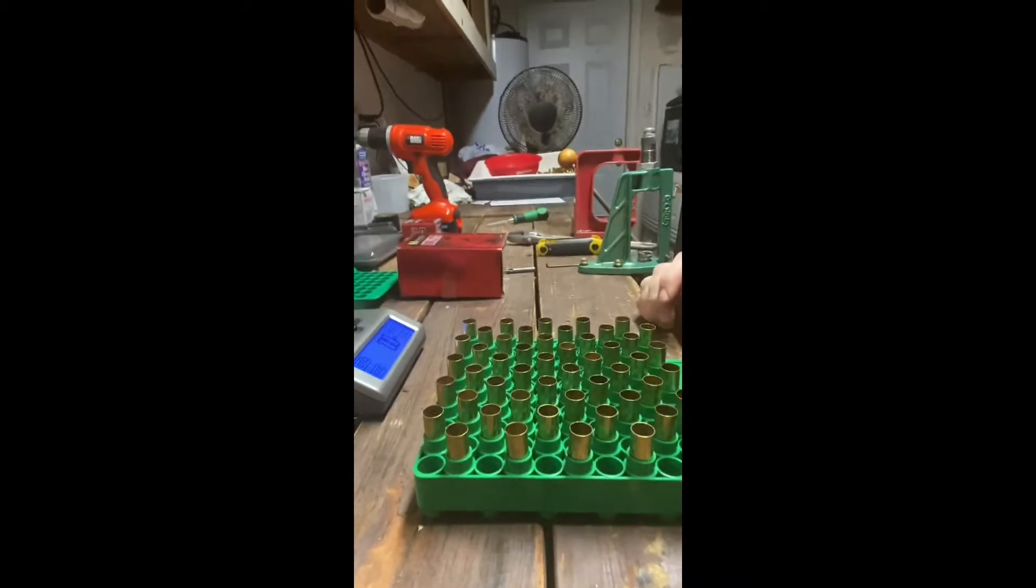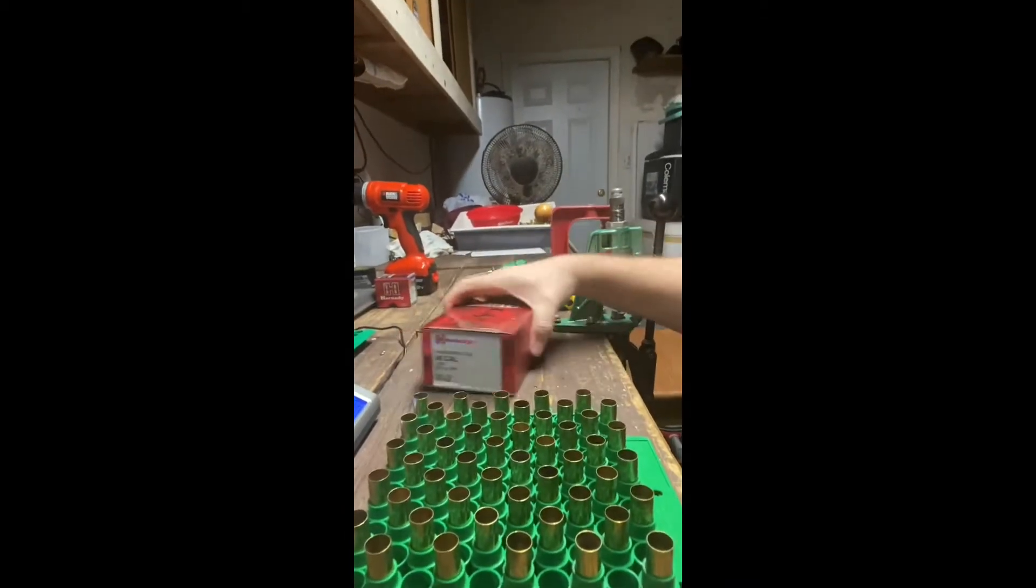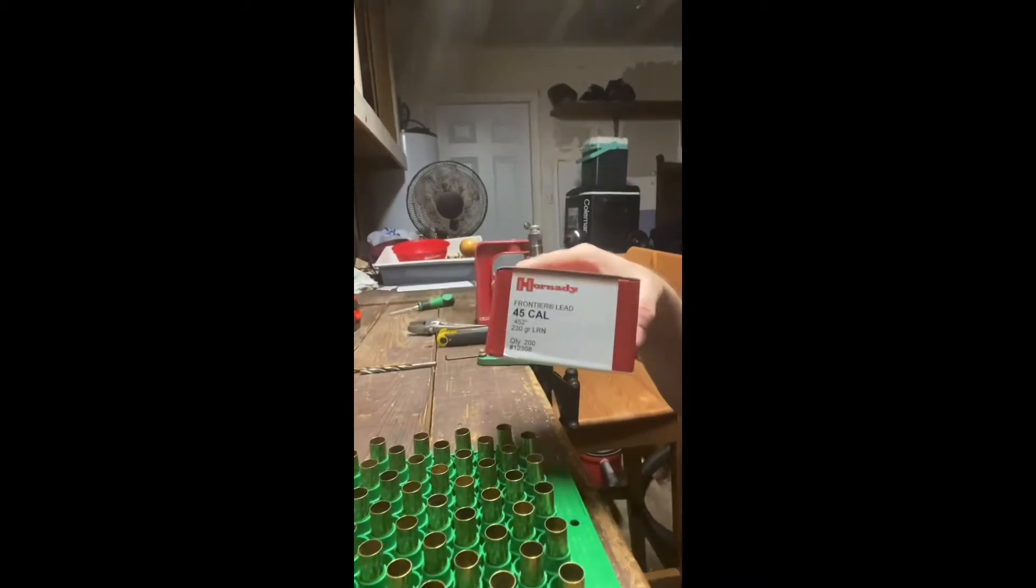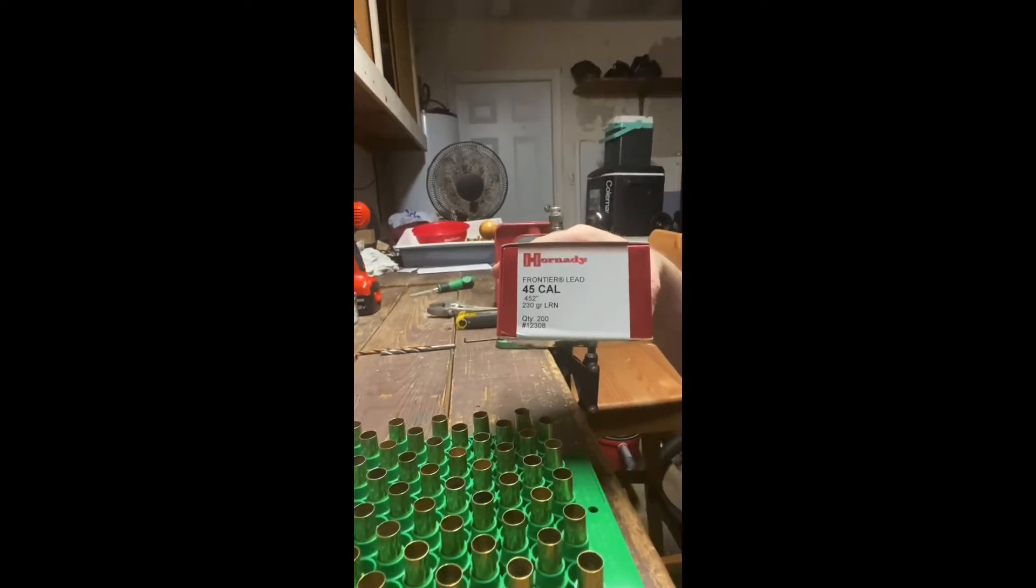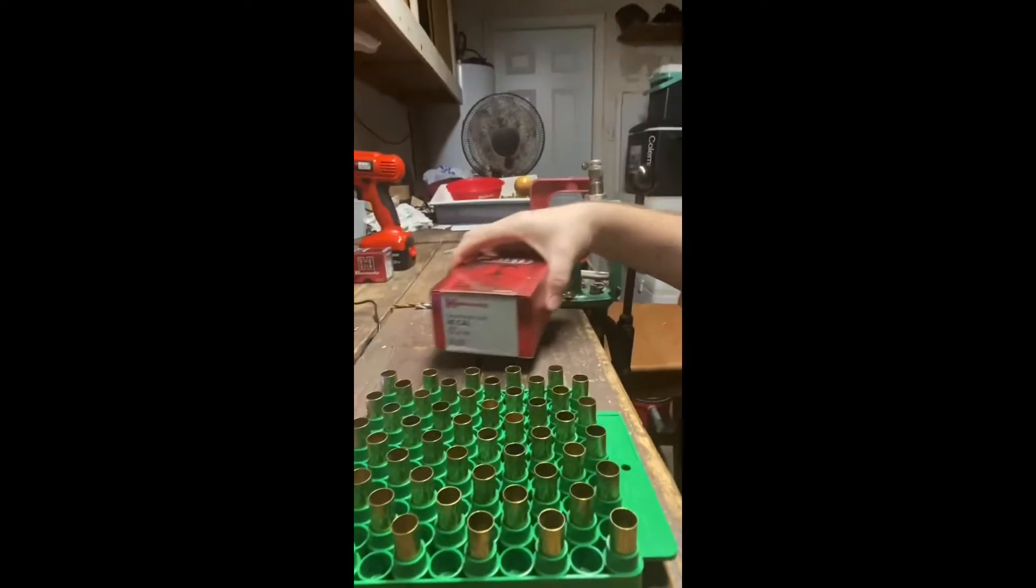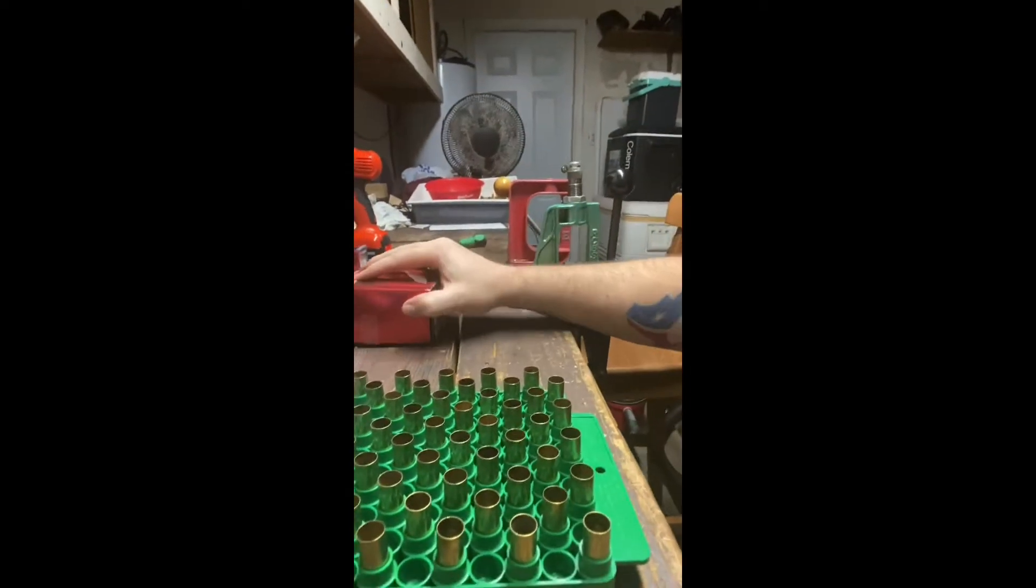Alright, so I'm going to be making some 45 ACP rounds today and just want to take you through the process so you can see how easy it is. I'm using some cowboy rounds, my brass is already set up. I've got 45 auto cowboy rounds, 230 grain lead round nose. Very good, cheap rounds. I can get a box of 200 for about 20 bucks, so to me it's worth it.